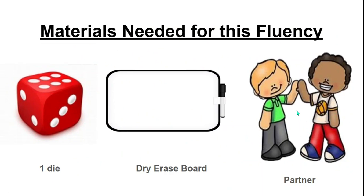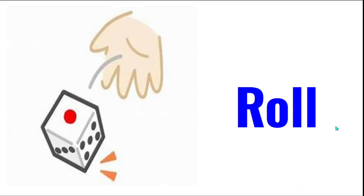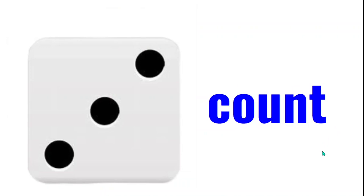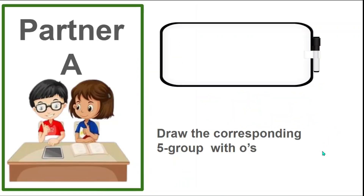I want you to decide which partner is going to be partner A and partner B. Roll, count the dots on the die, and partner A, draw that many circles on your dry erase board.